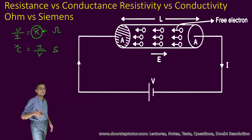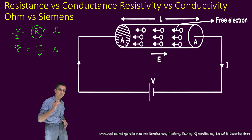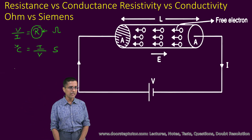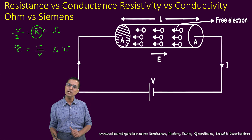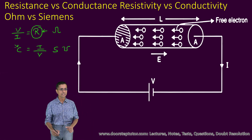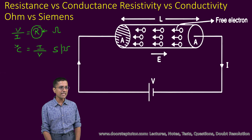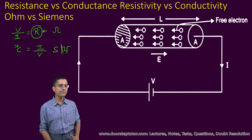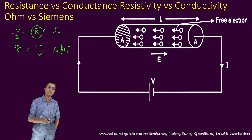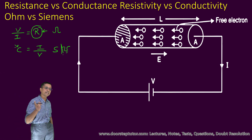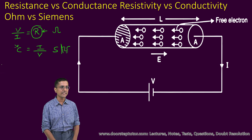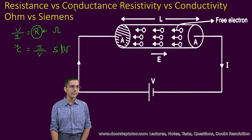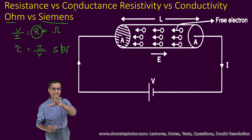Sometimes conductance is also expressed in the old unit Mho, which is an arcane, old unit. Both Siemens and Mho are correct, but now we use only Siemens. The SI unit is Siemens. So resistance and conductance, and the difference between Ohm and Siemens, should be very clear now.